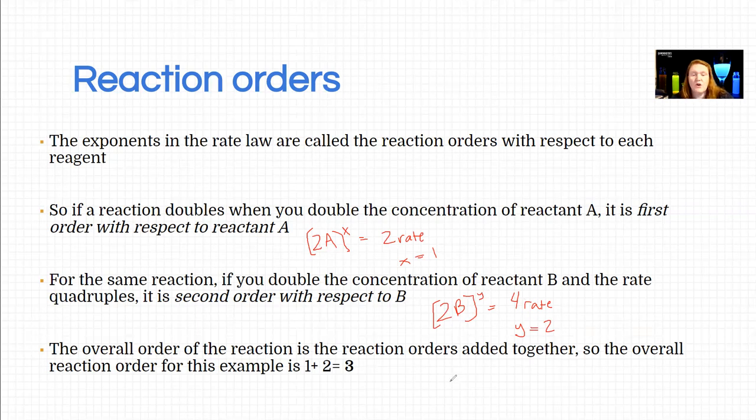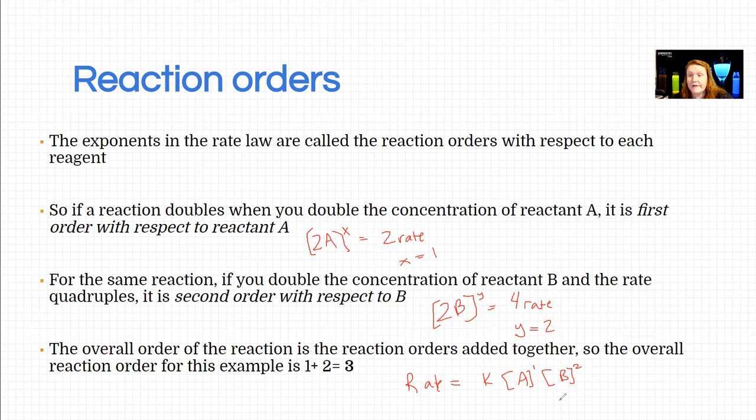To get the total overall reaction order, you just add everything up. So in this example here, the rate would be whatever constant times A raised to the 1 times B raised to the 2. And if we had real data, we could plug in rate, solve for k, and have a complete applicable specific rate law.